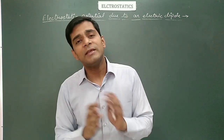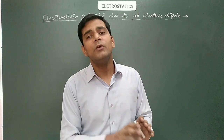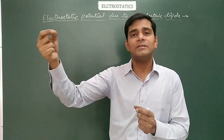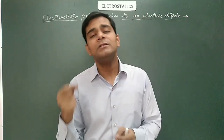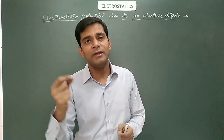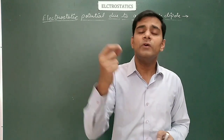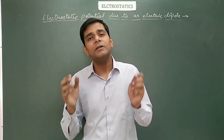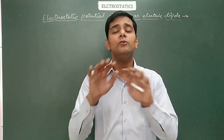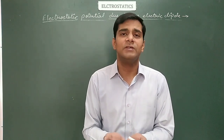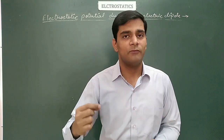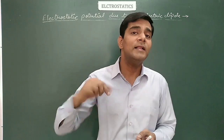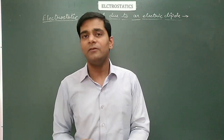Before starting this lecture, let me revise the contents of the first lecture of the second chapter on electrostatic potential. The electrostatic potential is the amount of work done to bring a unit positive test charge from infinity to the given point inside the electric field. Its SI unit is joule per coulomb, known as the volt.